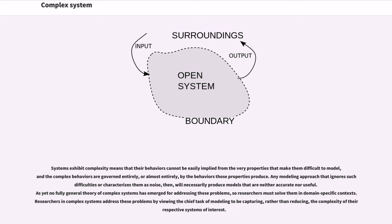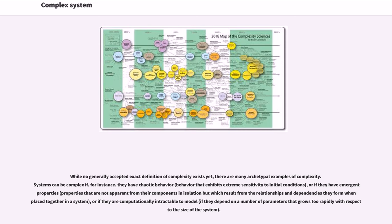Systems exhibit complexity means that their behaviors cannot be easily inferred from the very properties that make them difficult to model, and the complex behaviors are governed entirely, or almost entirely, by the behaviors those properties produce. Any modeling approach that ignores such difficulties or characterizes them as noise will necessarily produce models that are neither accurate nor useful. As yet no fully general theory of complex systems has emerged for addressing these problems, so researchers must solve them in domain-specific contexts. Researchers in complex systems address these problems by viewing the chief task of modeling to be capturing, rather than reducing, the complexity of the respective systems of interest. While no generally accepted exact definition of complexity exists yet, there are many archetypal examples of complexity.